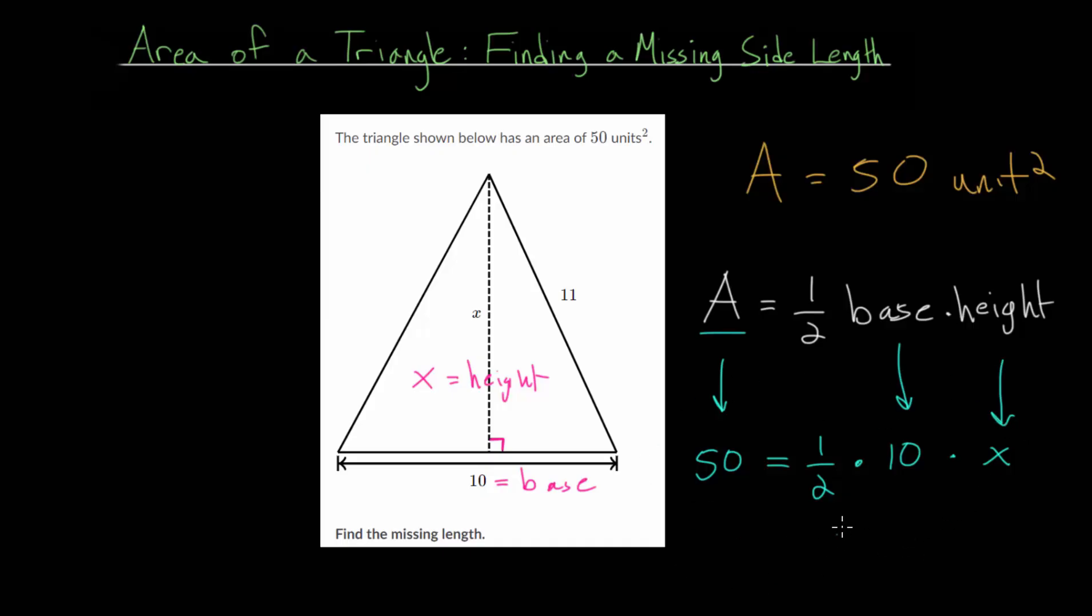So let's just simplify. One-half of 10 we can just rewrite that as 5. So we have 50 is equal to 5 times x. And to solve this equation we just need to divide each side by 5 to cancel out this multiplication. So 5 divided by 5, we know that's 1, and 50 divided by 5 is 10. So x is 10 here.